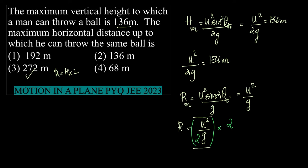u²/2g is actually the maximum height. So what is the value of u²/2g according to the given question? It's 136 meters. Which means R can be written as 136 into 2, which is 272 meters.